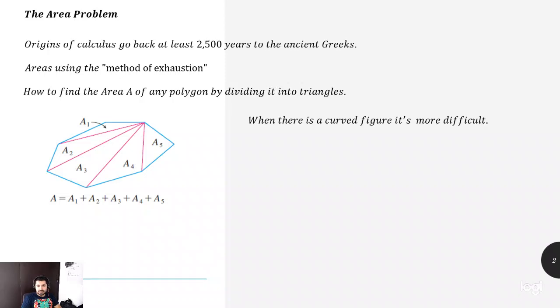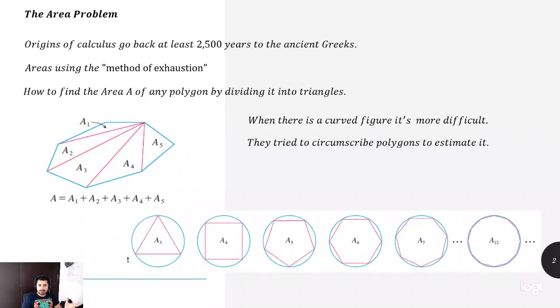So the problem is when you're facing circular figures. The idea is the Greeks tried to circumscribe polygons to estimate it. So if you have this circle, you know that the sides, this one should be three, four, five, and so forth, the number of sides. The more sides you get, the more approximation of the area you get.